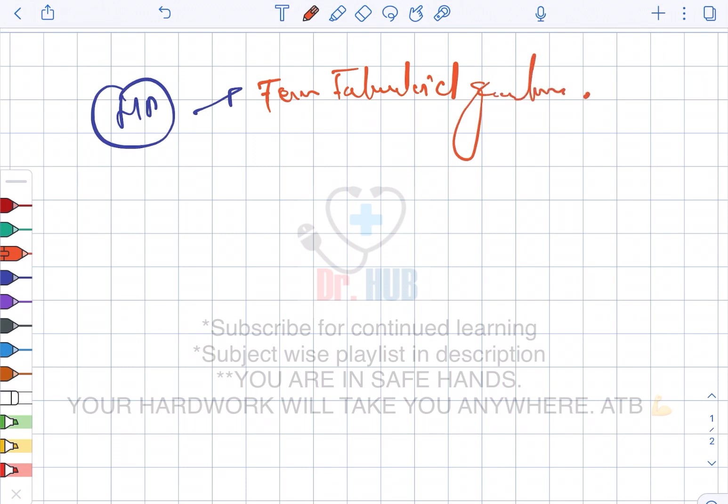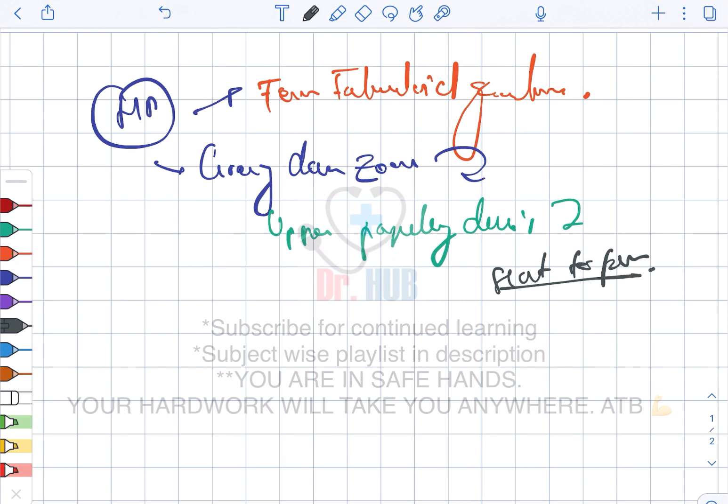Now looking at the histopathological findings - it includes fewer tuberculoid granulomas and also includes the grenz clear zone, which is present in the upper papillary dermis.